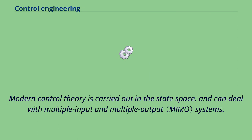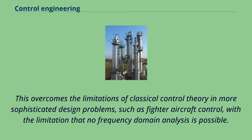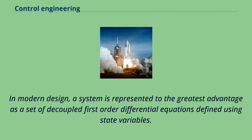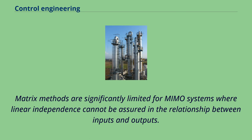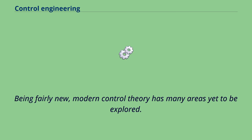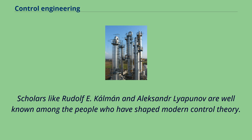Modern control theory is carried out in the state space and can deal with multiple-input and multiple-output systems. This overcomes the limitations of classical control theory for more sophisticated design problems, such as fighter aircraft control, with the limitation that no frequency domain analysis is possible. In modern design, a system is represented as a set of decoupled first-order differential equations defined using state variables. Non-linear, multivariable, adaptive, and robust control theories come under this division. Matrix methods are significantly limited for MIMO systems where linear independence cannot be assured. Being fairly new, modern control theory has many areas yet to be explored. Scholars like Rudolf E. Kalman and Alexander Lyapunov are well known among those who have shaped modern control theory.